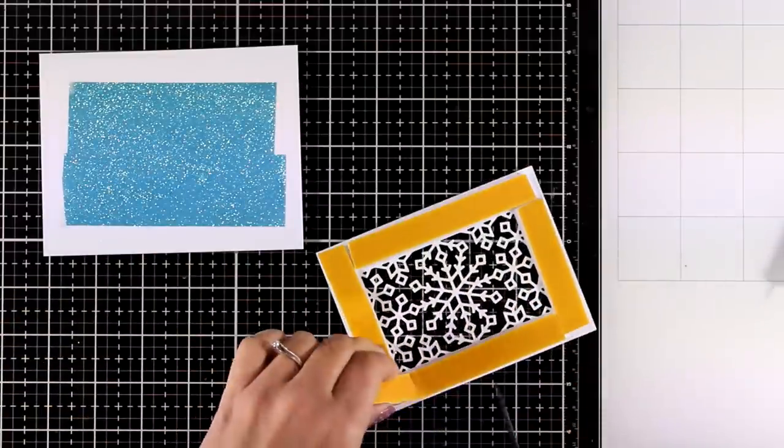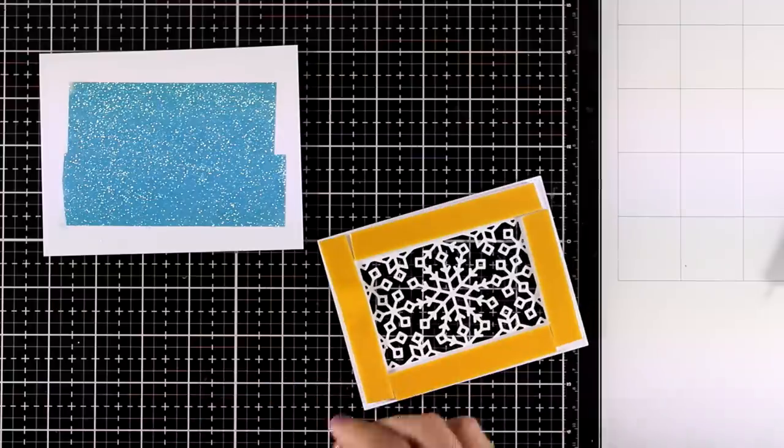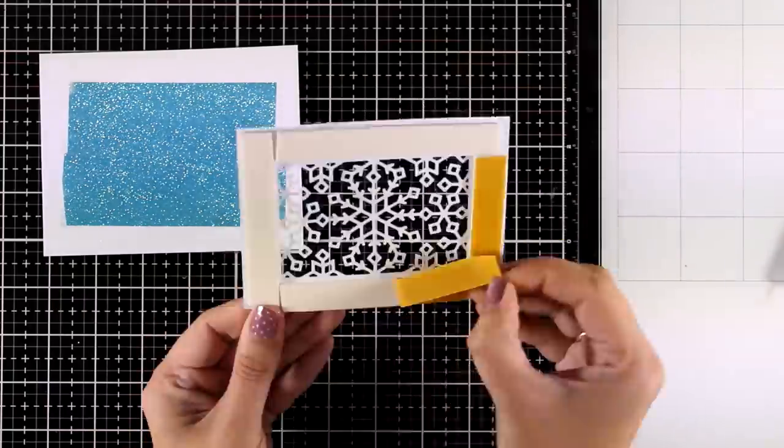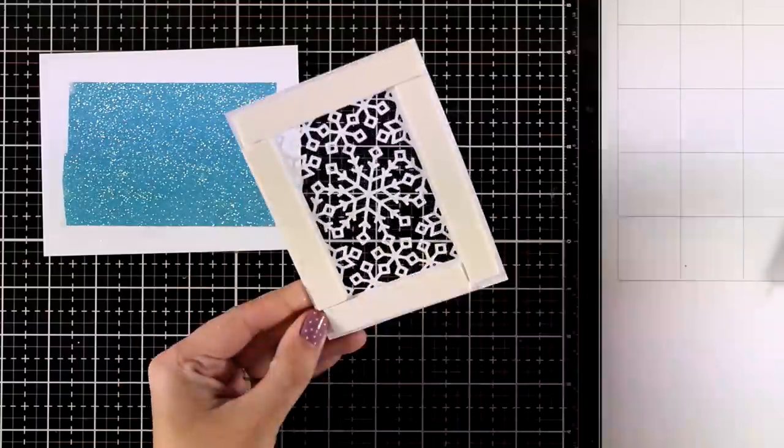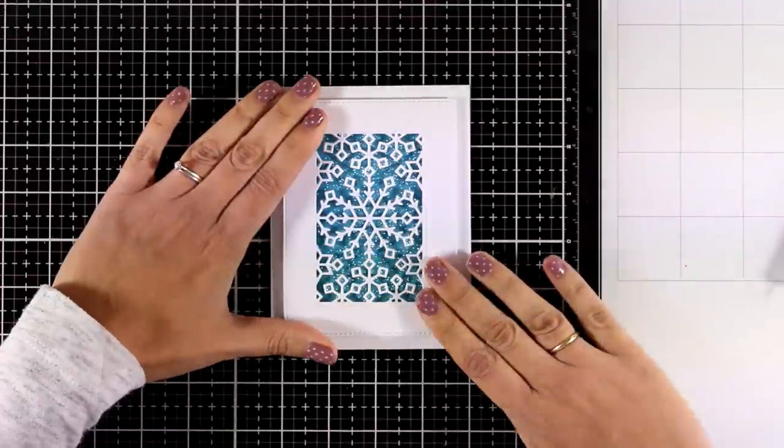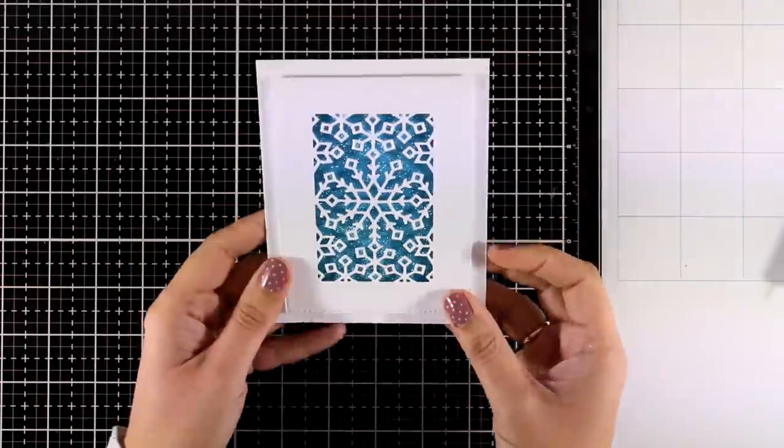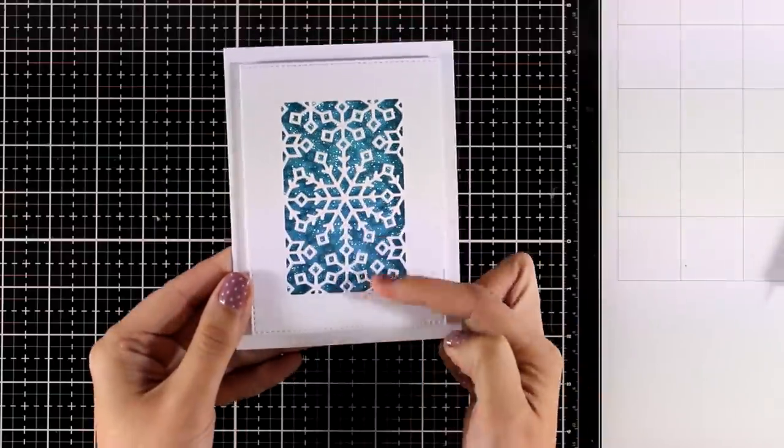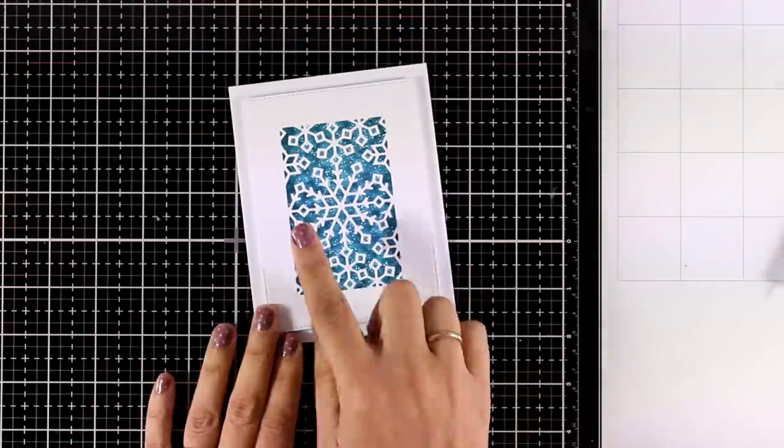Of course this would make a beautiful shaker card but I am saving that for the second card. Both the cards today are using window panels on top of your card base with glitter at the back. Same idea, different execution. So here at the center it is not very well supported. If you want to support it even more you can always add some acetate at the back but I am going to leave it as it is.